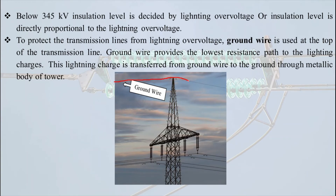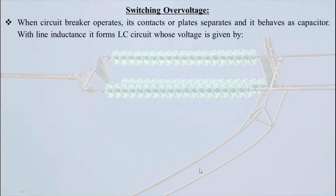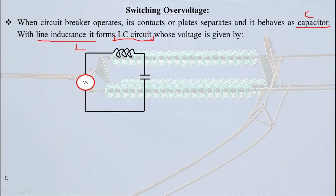Now we will discuss the second reason for over voltage: switching over voltage. When there is a fault, the circuit breaker operates and its contacts separate. When the contacts separate, the breaker behaves as a capacitor because the contacts are metallic and the space between them acts as a dielectric medium. These separated contacts and the inductance of the line together form an LC circuit.